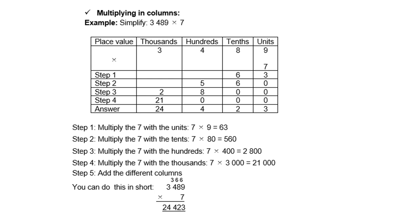Let's see multiplication: 3,489 times 7. There's the longer way of doing it where you can multiply 7 times 9, 7 times 80, 7 times 400, and 7 times 3,000. Much longer way of doing it.